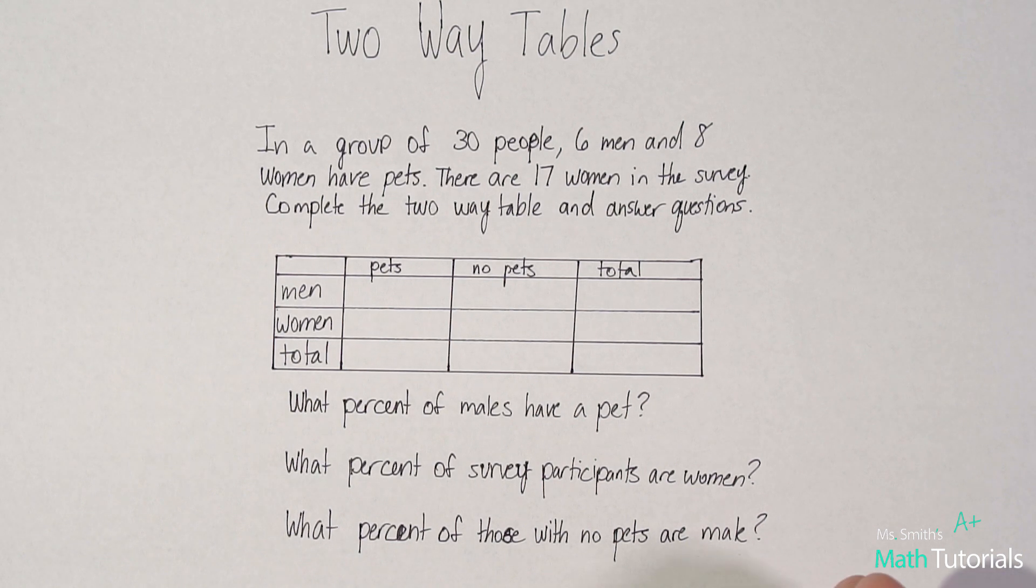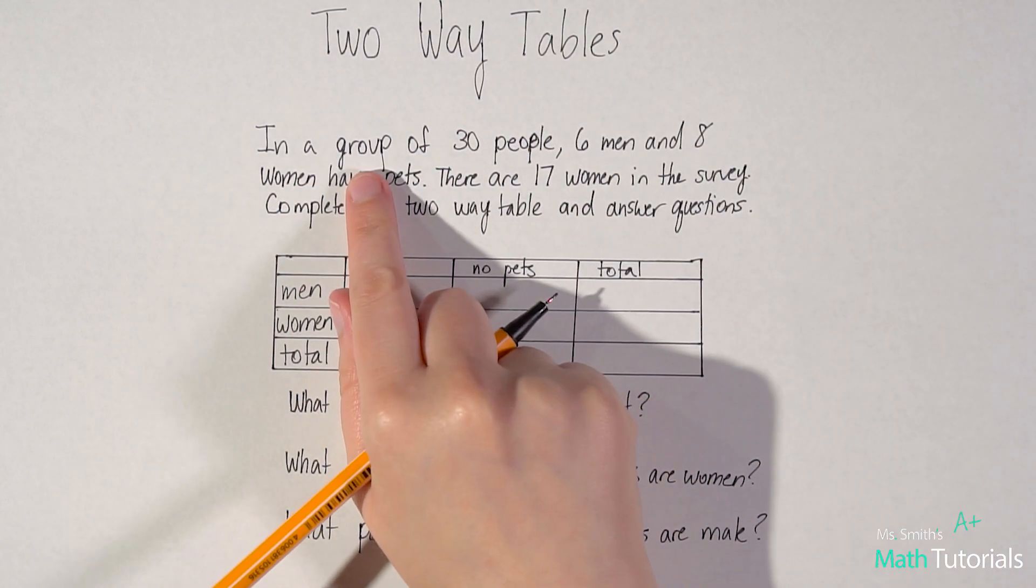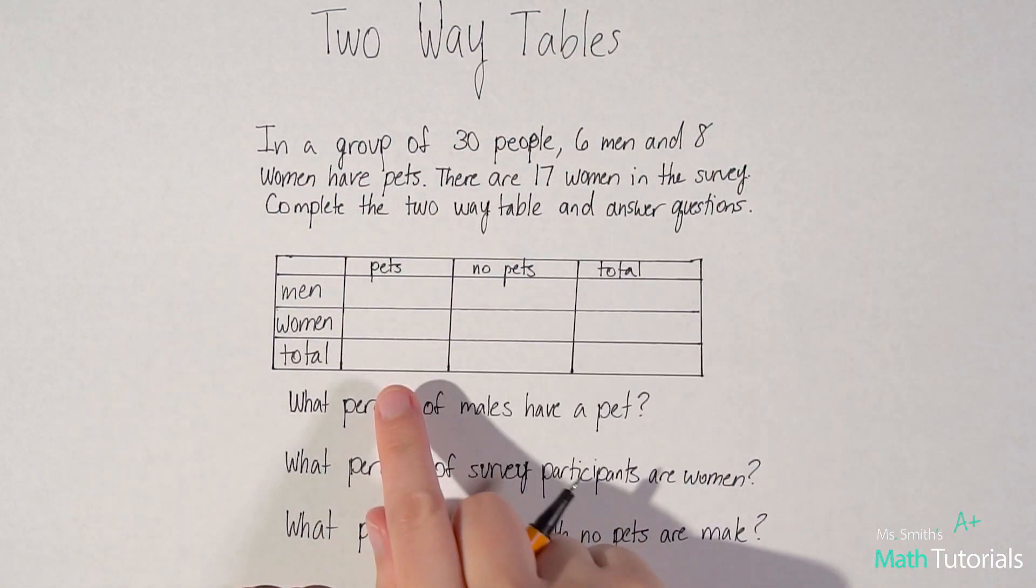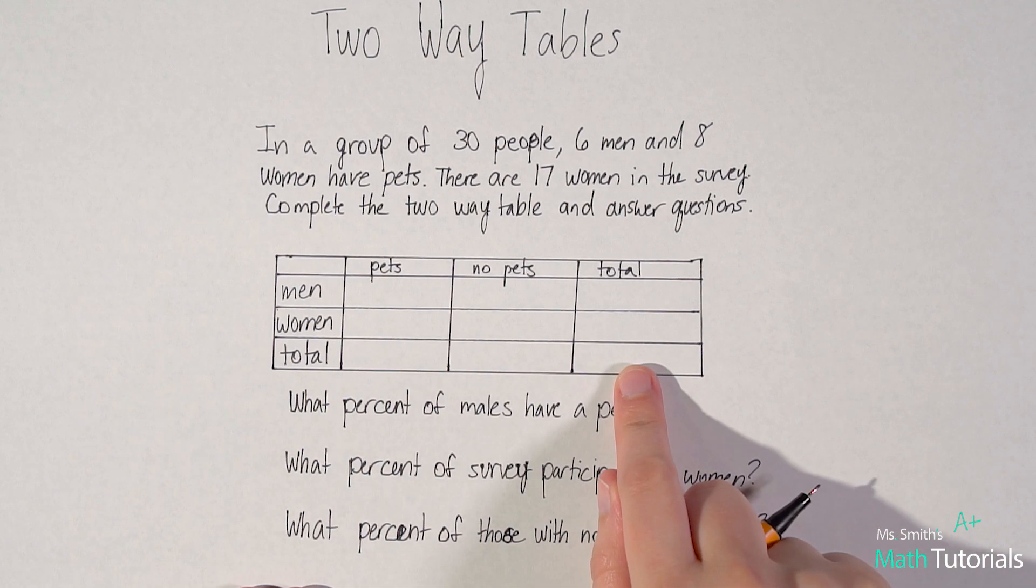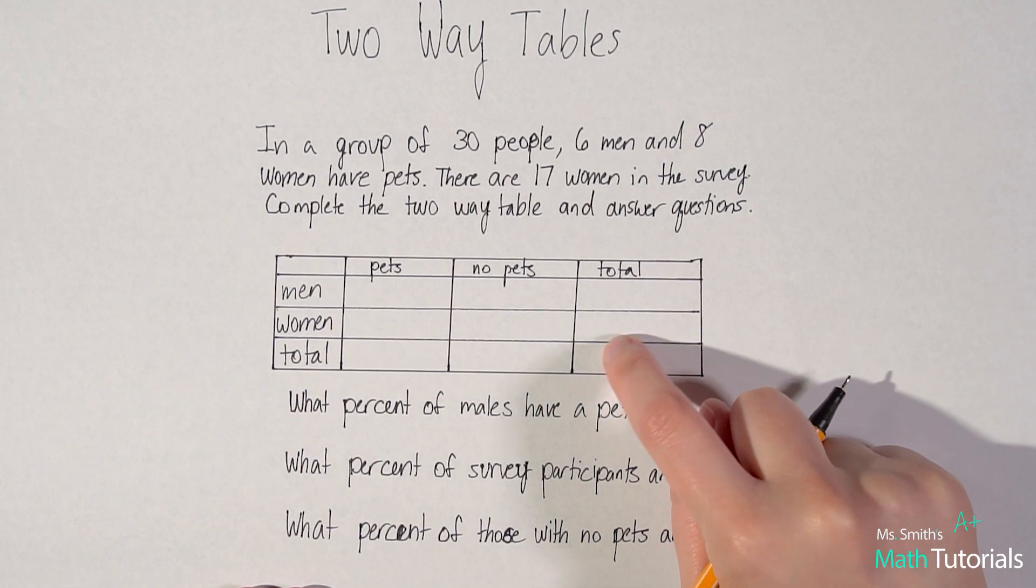Okay, so we've got to take what we've learned here, that we have a group of 30 people. So our total number of people, men and women, would be 30.